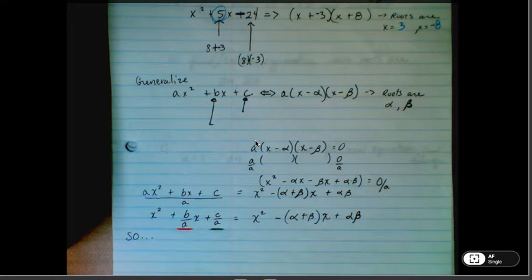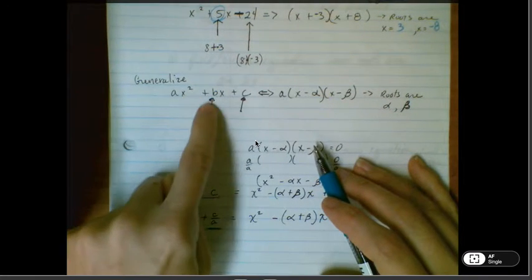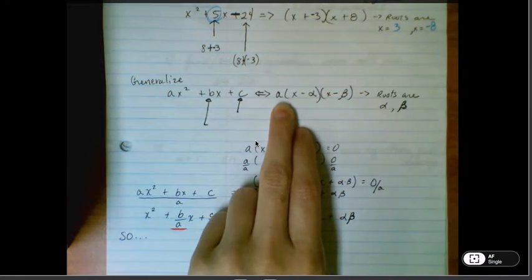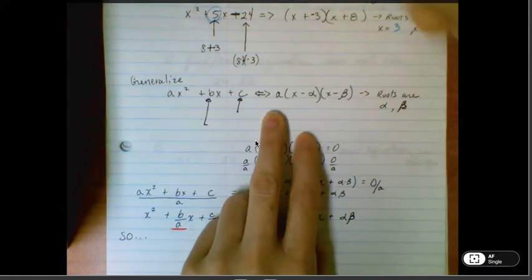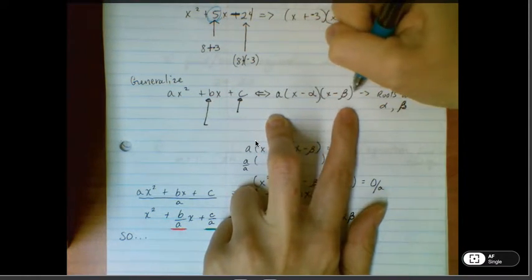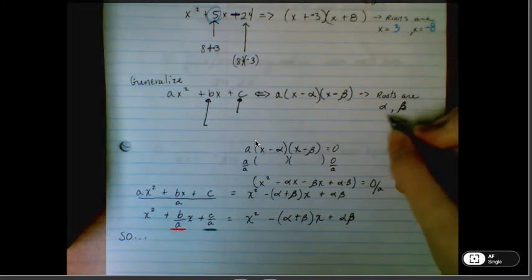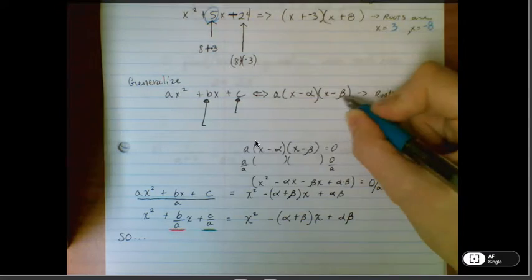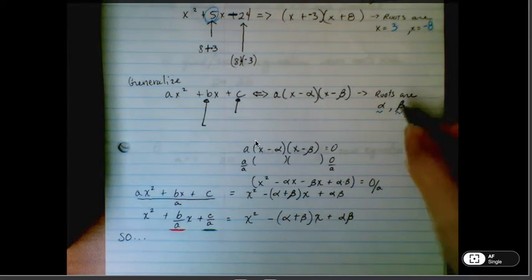So we're going to try to generalize that into a format that's helpful. So ax squared plus bx plus c is equal to a factored out version of a times the quantity x minus alpha times x minus beta, where you have roots alpha and beta. So here it's the opposite of alpha, the opposite of beta, coming up with roots alpha and beta.